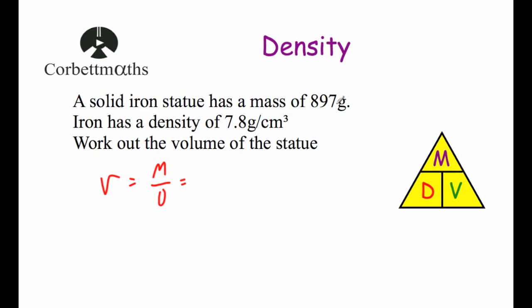If the mass were in kilograms, I would need to convert it into grams by multiplying by 1000, because we need to match the units used for our density — grams per centimeter cubed. So our mass is 897 and our density is 7.8, and if you divide those you get 115. Because the units for density were grams per centimeter cubed, the volume comes out in centimeters cubed.